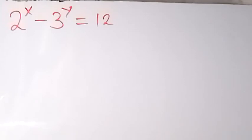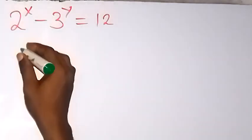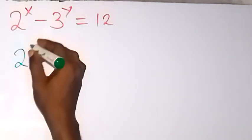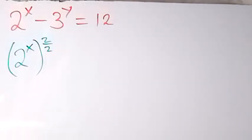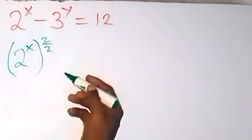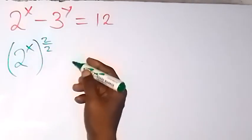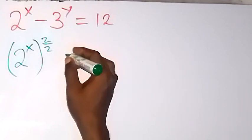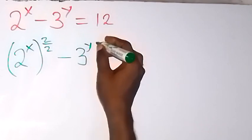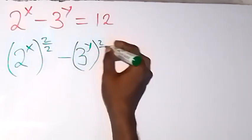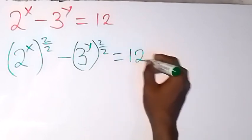Thank you for joining us. Here we want to solve this problem, finding the value of x and y. We can rewrite this as 2 raised to power x, then all raised to power 2 over 2, which is still 1. Minus the same thing with 3 raised to power y, also raised to 2 over 2, and then equals 12 on this side.